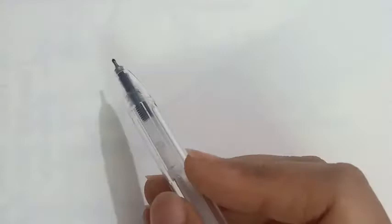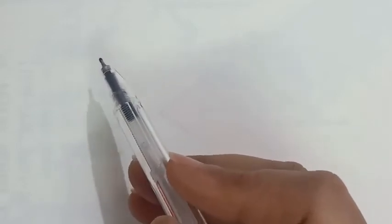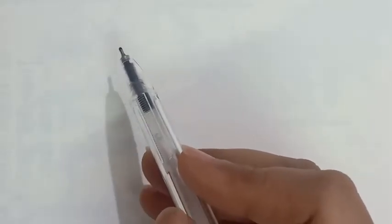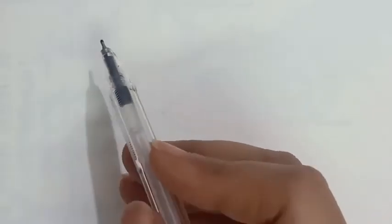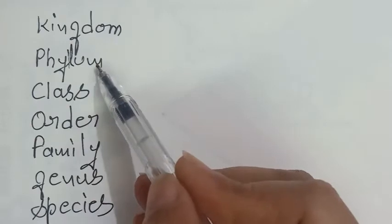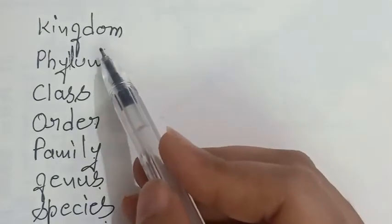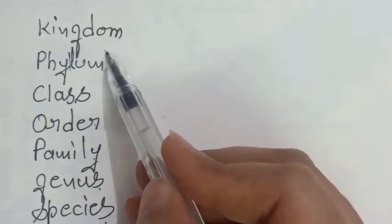Now student, next thing is hierarchies in classification. What is hierarchy? The framework of classification is in a hierarchical order in which the groups are arranged in definite order from higher to lower categories. These categories are kingdom, phylum, class, order, family, genus, species. So kingdom is the highest category of classification and species is the lowest.